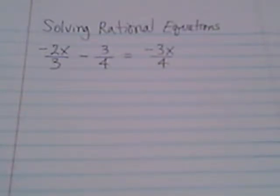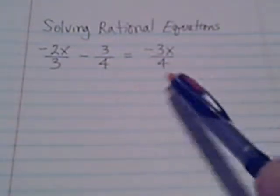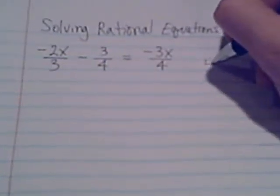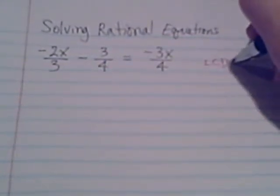Here's our first one: negative 2x over 3 minus 3/4 equals negative 3x over 4. The first step is to find the common denominator. Our denominators here are 3, 4, and 4, so for the common denominator we will use 12.